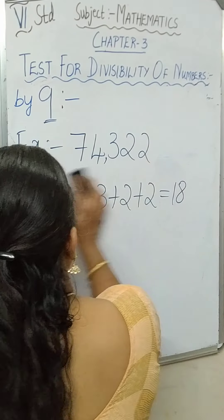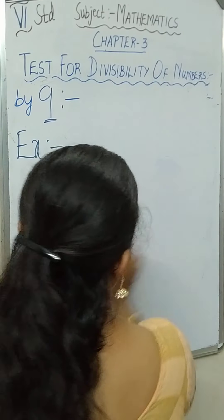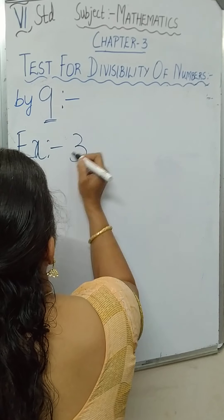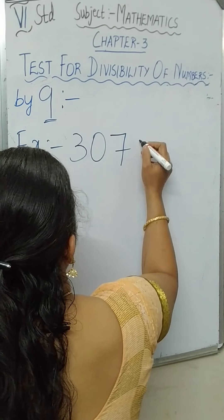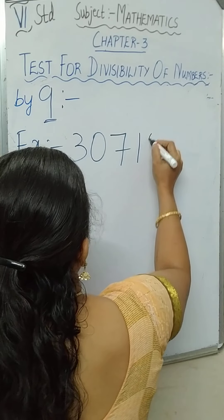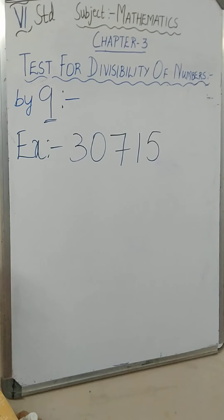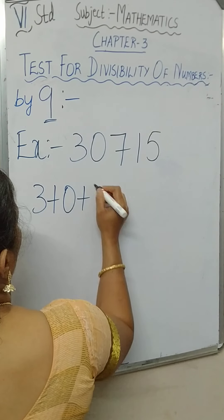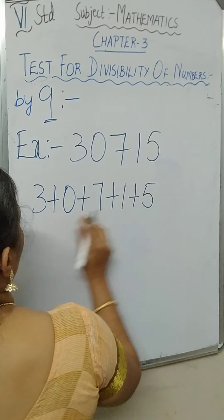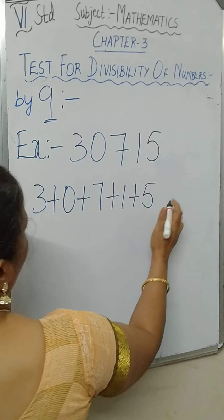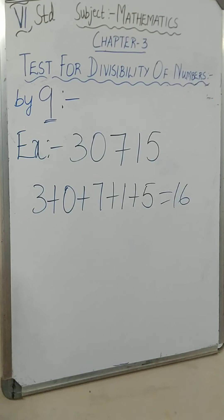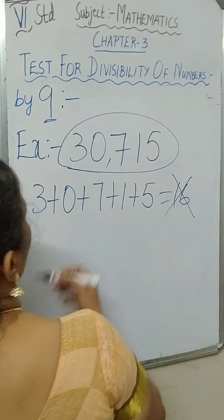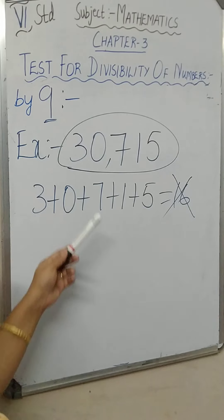Let us see one more example: 30,715. Add all the digits: 3 plus 0 plus 7 plus 1 plus 5. That gives 3 plus 7 is 10, 10 plus 1 is 11, 11 plus 5 is 16. Is 16 a multiple of 9? No. So 30,715 is not divisible by 9.